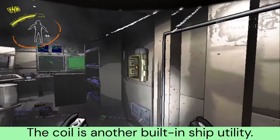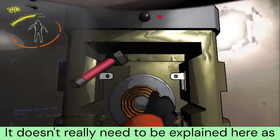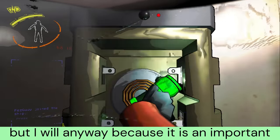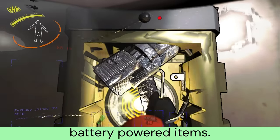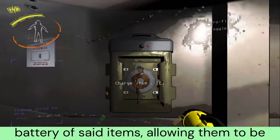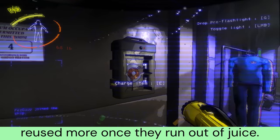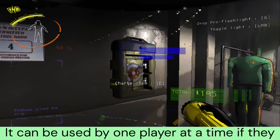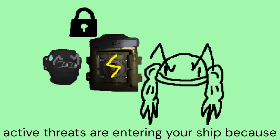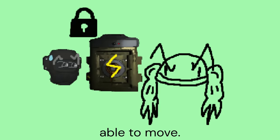The coil is another built-in ship utility. It is able to recharge the battery life of said items, allowing them to be reused more once they run out of juice. It can be used by one player at a time if they are holding a rechargeable item and press the E key to interact with it, resulting in the item they are holding to be fully charged. Using the coil will lock you in an animation, so be careful if active threats are entering your ship.